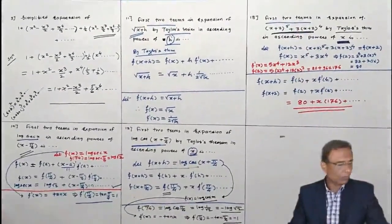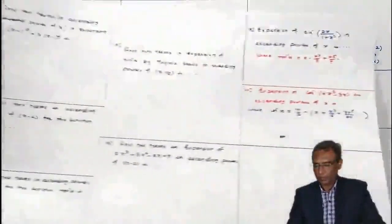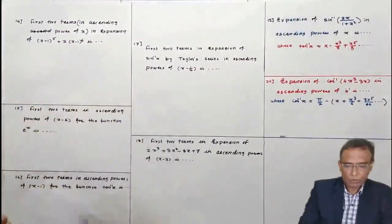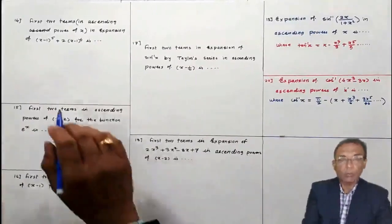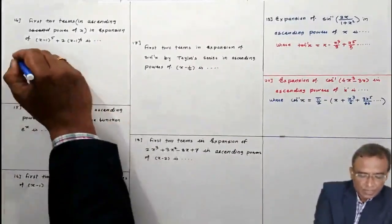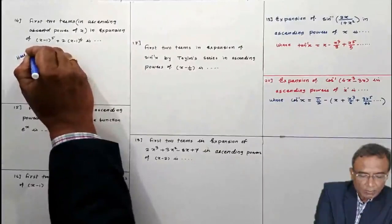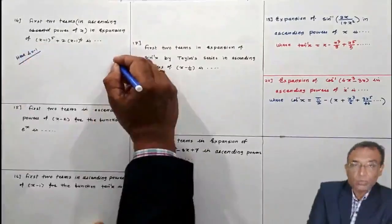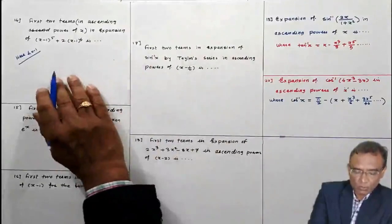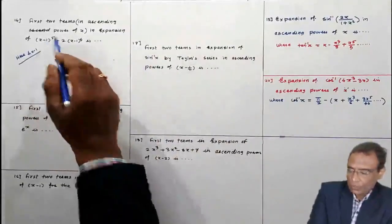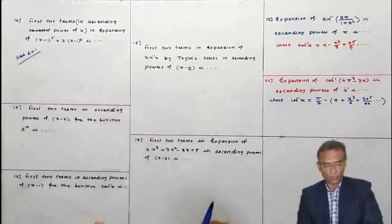Problem 14 (for you): First two terms in ascending powers of x for the same type of function but with (x−1) instead of (x+2). This problem is identical to the previous one; only +2 is replaced by −1. Try to solve it similarly.